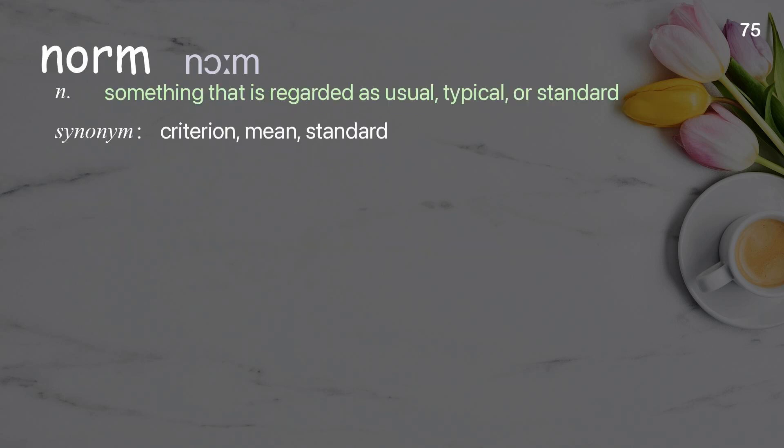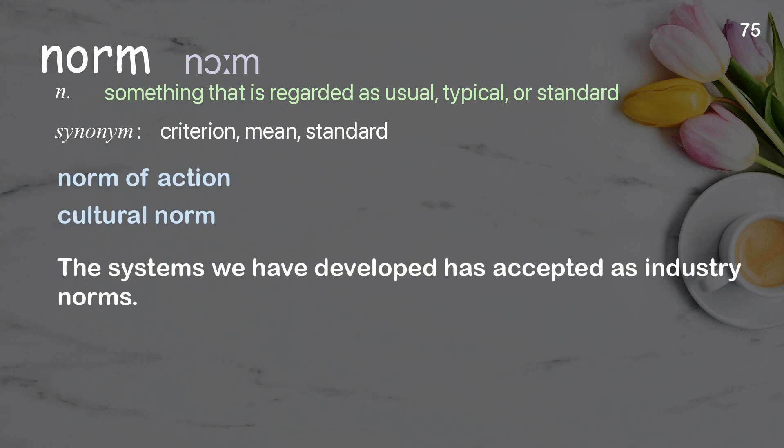Norm: something that is regarded as usual, typical, or standard. Examples: norm of action, cultural norm. The systems we have developed have been accepted as industry norms.